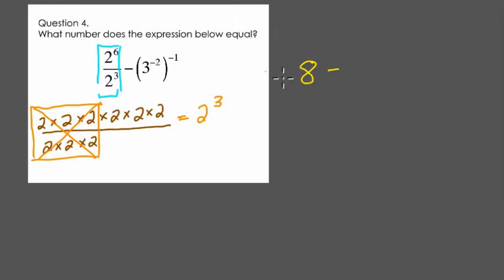Well, 3 to the negative 2nd to the negative 1st. Well, what if I had, let's just look at this for a second, what if I had 3 squared to the 3rd? What would I do?